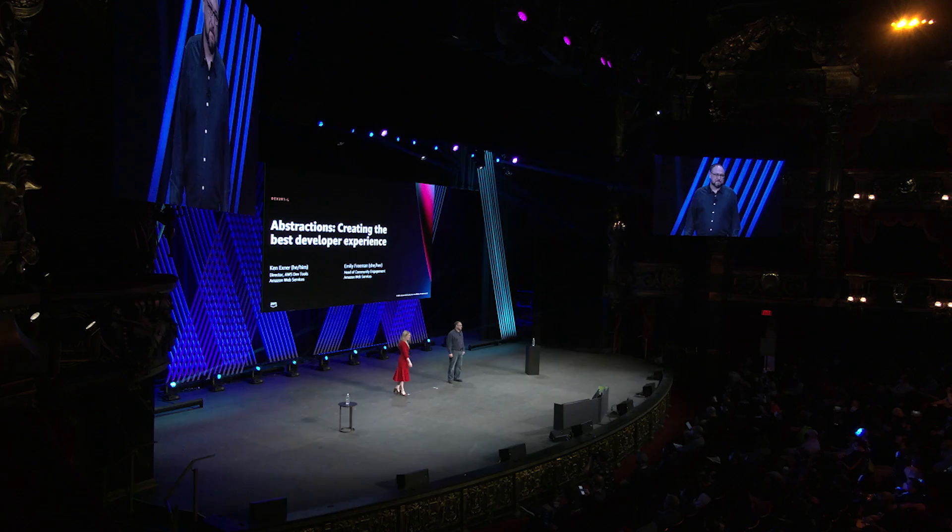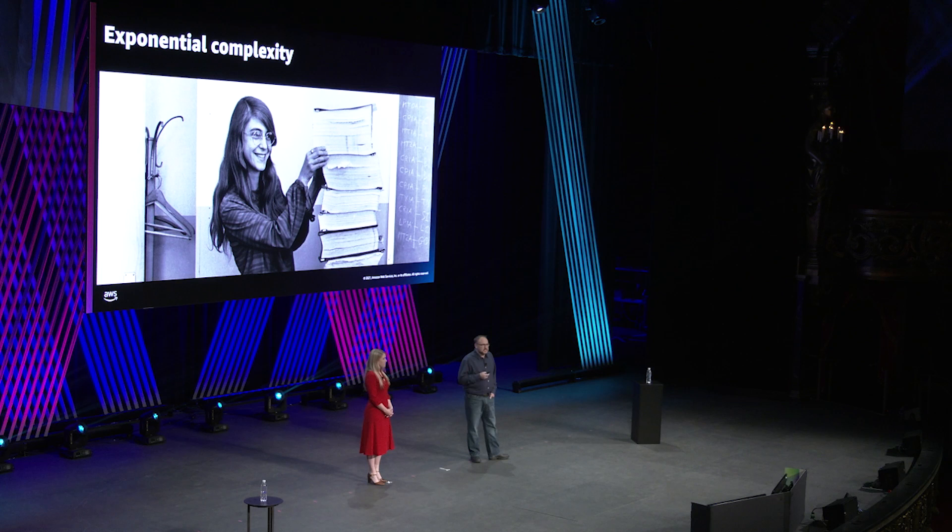The ecosystem in which we work is the most complex environment in tech to date. There was a point in time when software development was a straight line. Sure, there were different challenges — debuggers, for example, didn't exist when Margaret Hamilton wrote the code that put humans on the moon. She just had to be right, almost perfect, really. But the path to software delivery, while perhaps a little bit more difficult, was fairly straightforward.